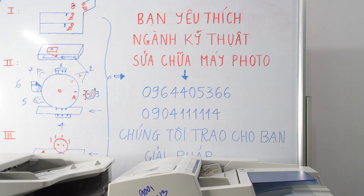Mỗi hãng lại có cách vào phần mềm để xóa lỗi khác nhau. Hiện tại trên thị trường chúng ta có Ricoh, Toshiba, Sharp, Xerox, Konica, v.v. Như vậy, làm thế nào để anh chị và các bạn có thể làm chủ hoàn toàn và xử lý dứt điểm, hay ít nhất là có thể biết được mã báo lỗi?